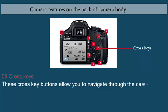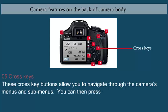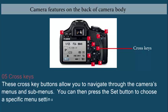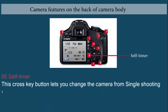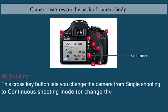Cross keys: These cross key buttons allow you to navigate through the camera's menus and sub menus. You can then press the set button to choose a specific menu setting. The cross key button also lets you change the camera from single shooting to continuous shooting mode or change the self timer settings.